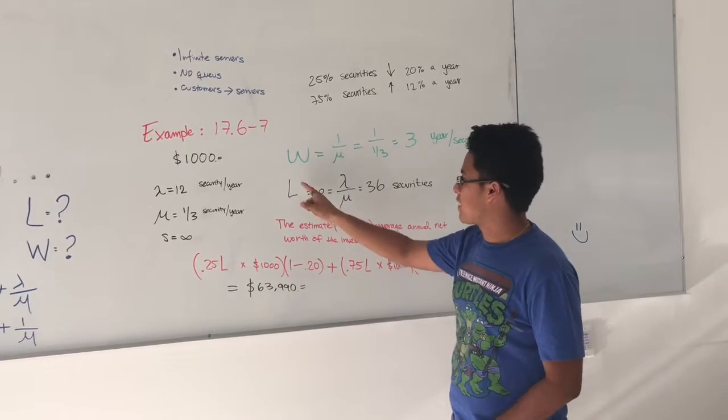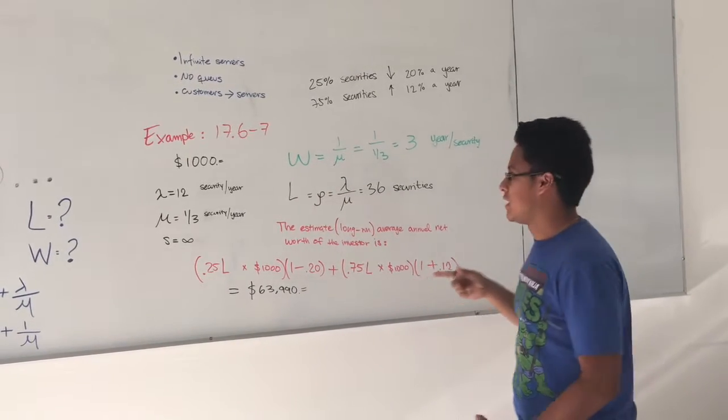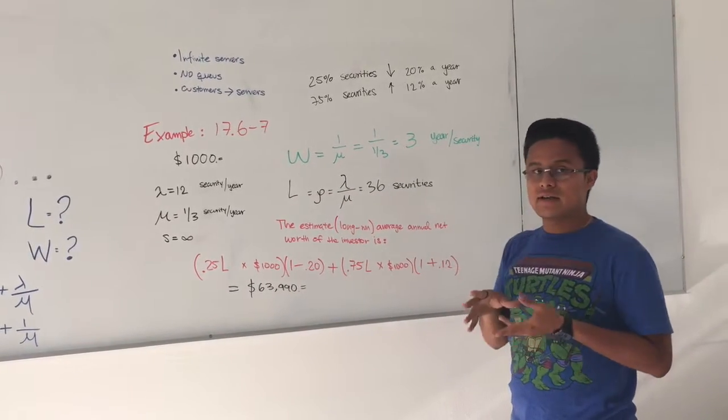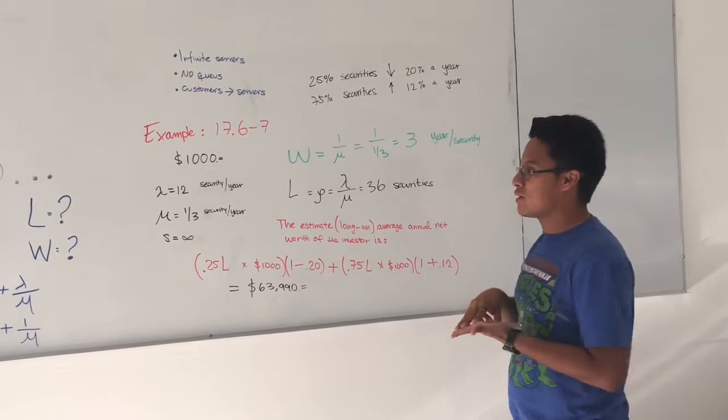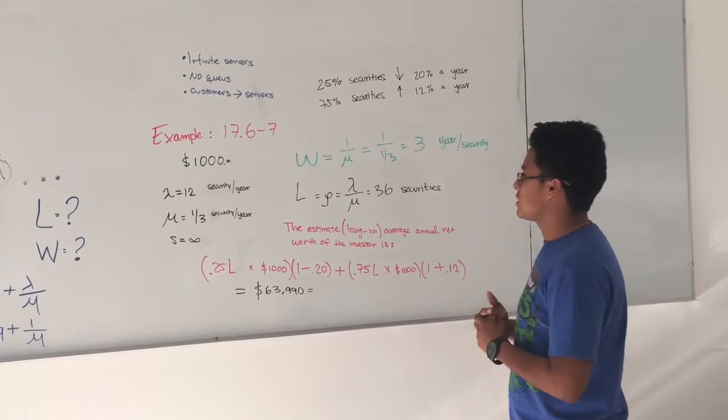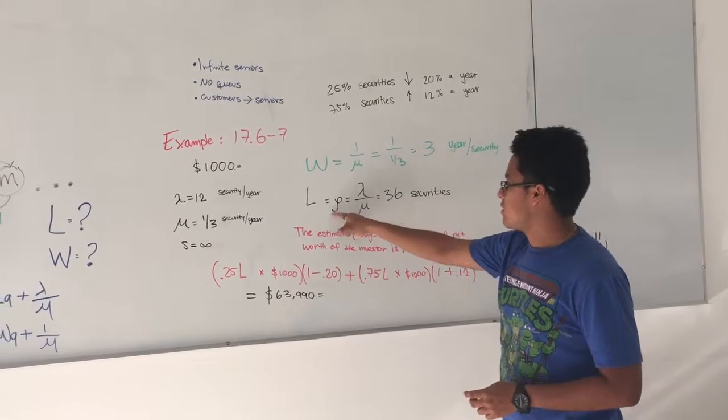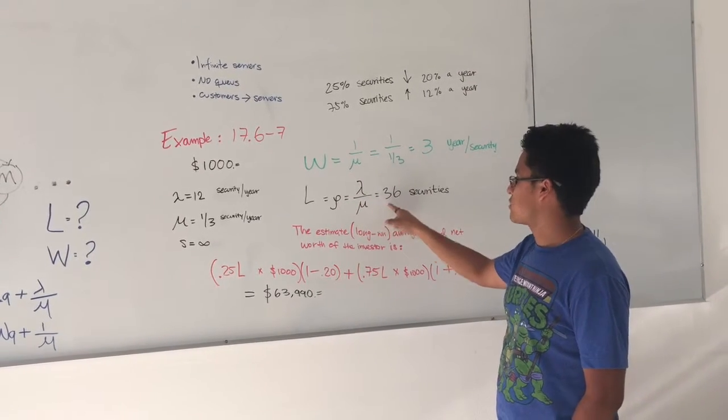We can calculate the L that is going to be the number of security that is going to be in the system. We know that LQ is zero because there is no queue in this problem. So we know that L is just lambda over mu, that is going to be 36.